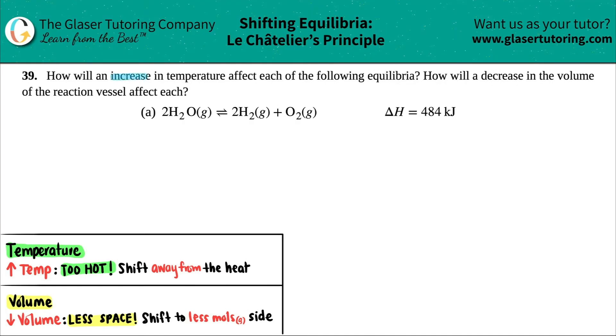Number 39: How will an increase in temperature affect each of the following equilibria? And then how will a decrease in the volume of the reaction vessel affect each? And then we have letter A out of the bunch.